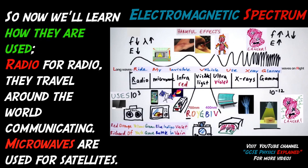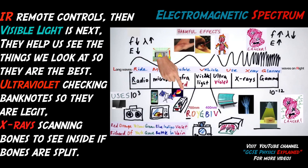So now we learn how they are used. Radio for radio, they travel around the world communicating. Microwaves are used for satellites. IR remote controls. The visible light is next, they help us see the things we look at, so they are the best.